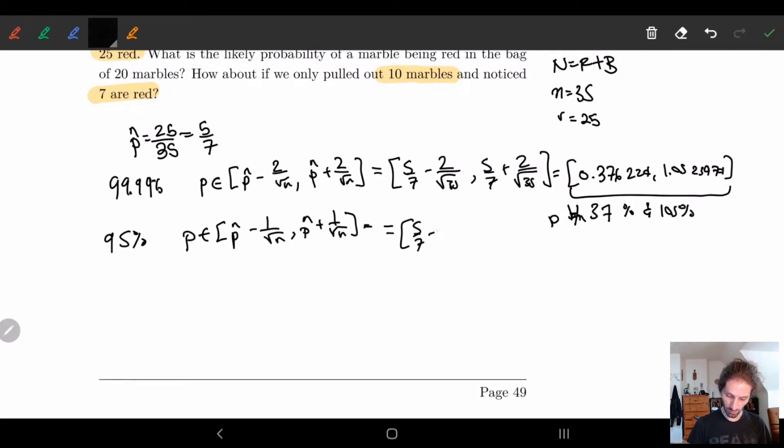So here we just put the numbers in again. 5 sevenths minus 1 over square root of 35. 5 sevenths plus 1 over square root of 35. This is equal to roughly 0.54525486 and 0.883.